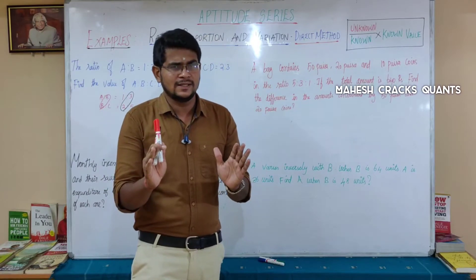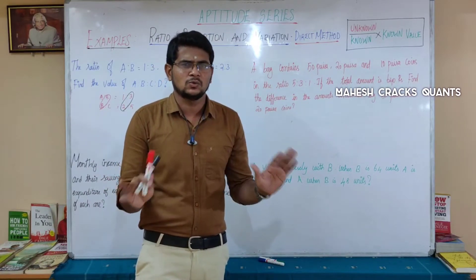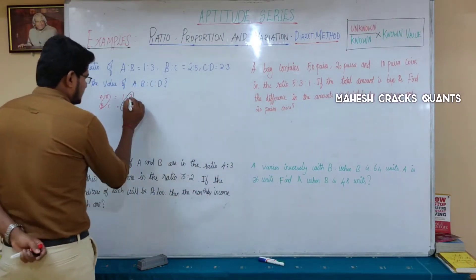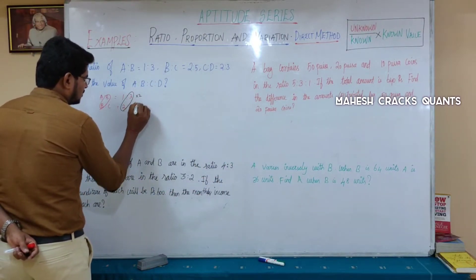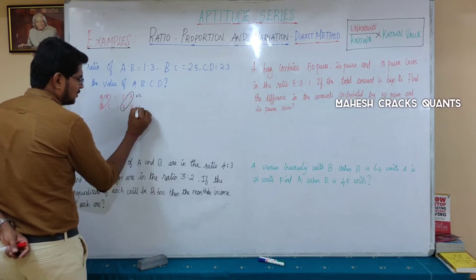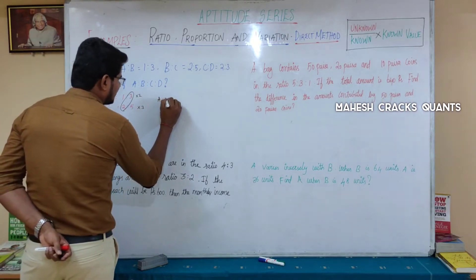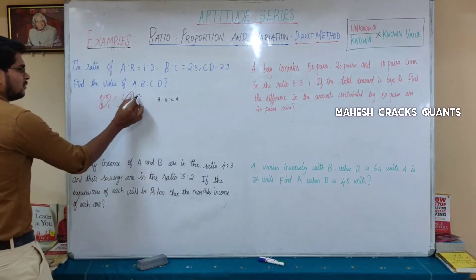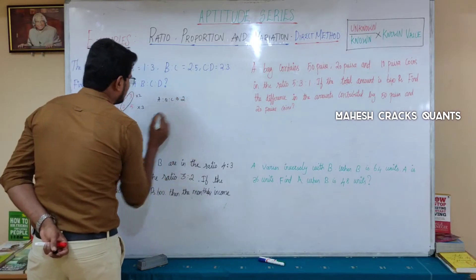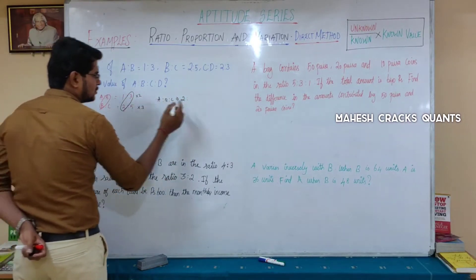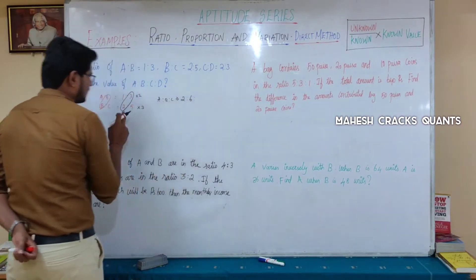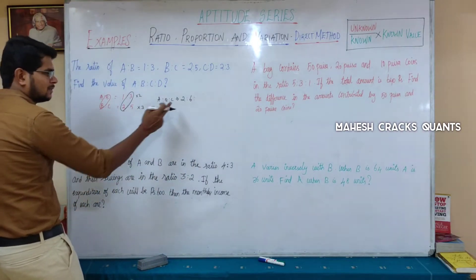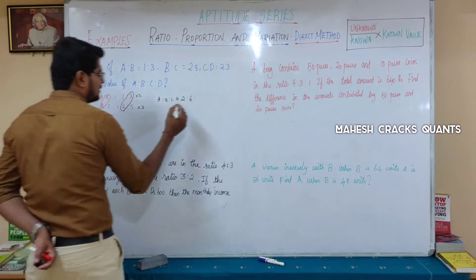The b values are 3 and 2. LCM of 3 and 2 is 6. So 6 divided by 3 is 2, and 6 divided by 2 is 3. If you substitute, you get the a, b, c values. For a: 1 multiplied by 2 gives 2. For b: 3 multiplied by 2 gives 6, and 2 multiplied by 3 gives 6. For c: 5 multiplied by 3 gives 15.